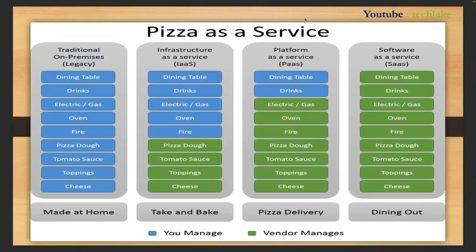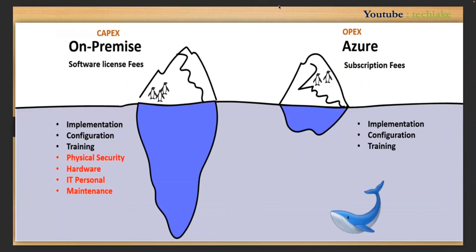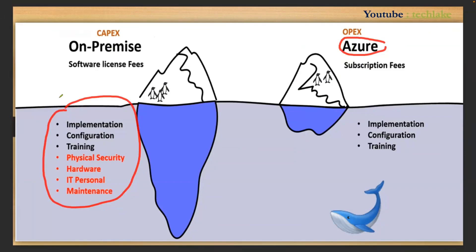In the next session, we will deep dive into why companies are choosing cloud services, what major benefits they are getting, and what hidden drawbacks exist with on-premises. We'll look at the major features available in cloud versus the hidden issues with on-premises in another video. If you're not subscribed, please subscribe to the channel. Thank you.